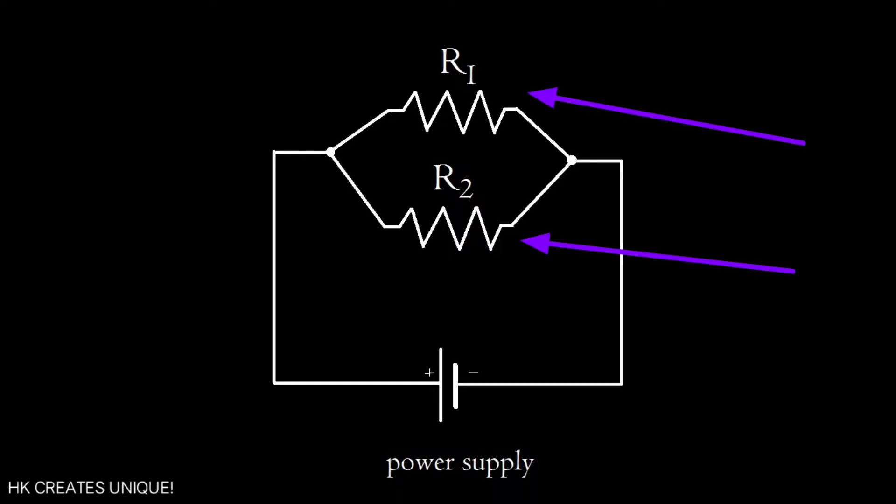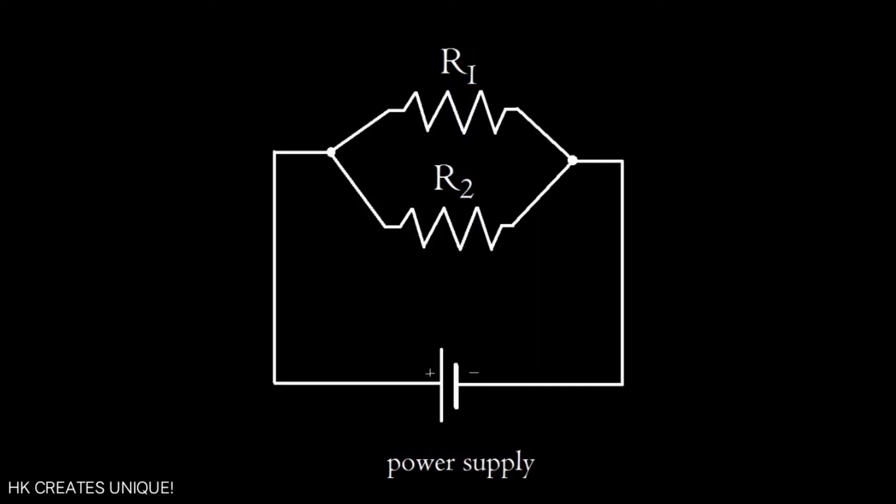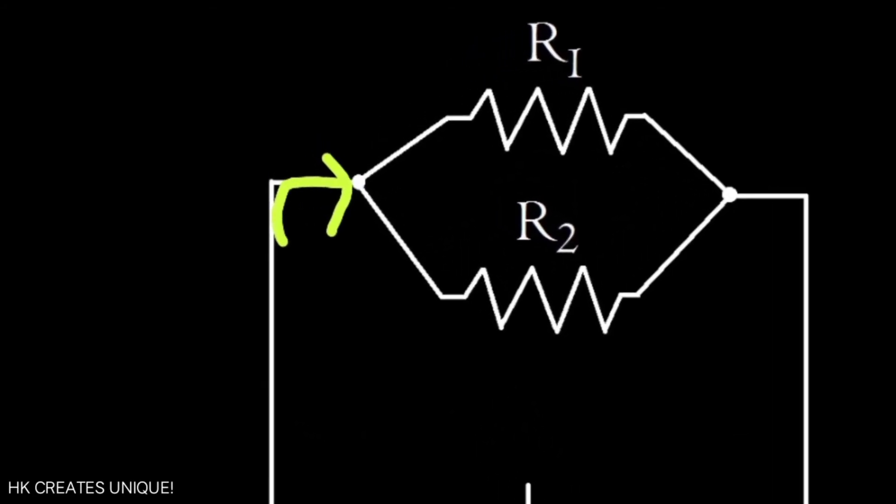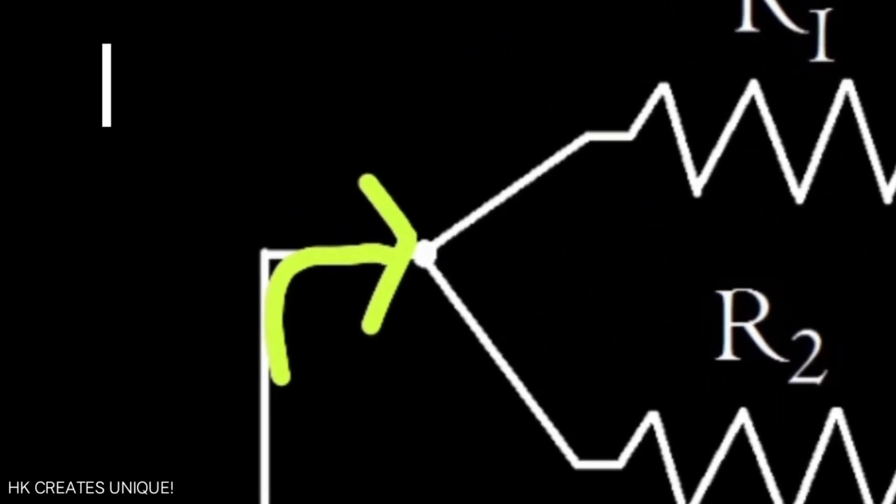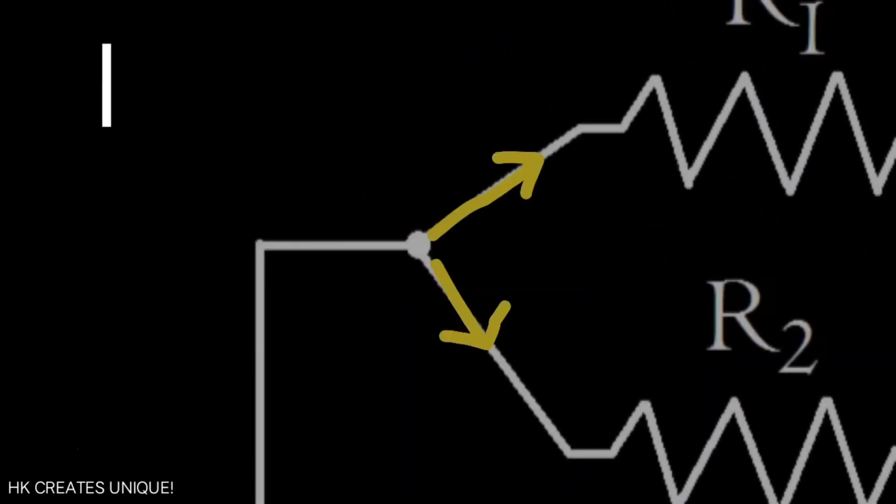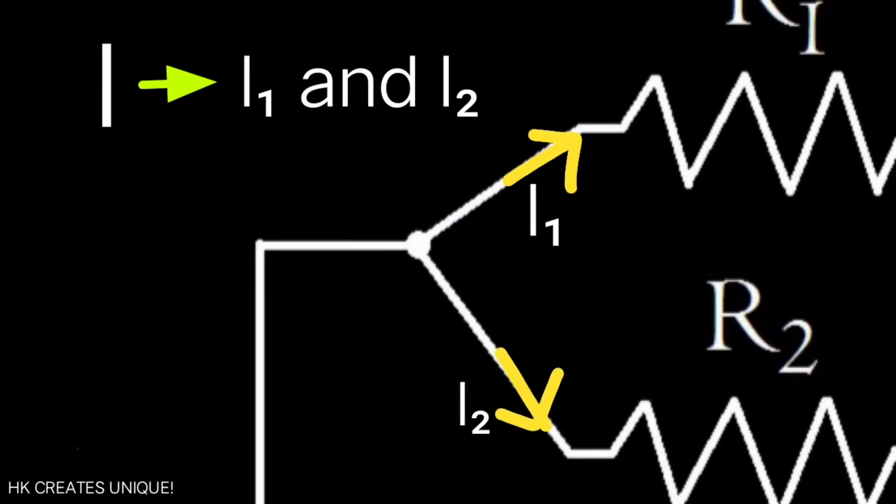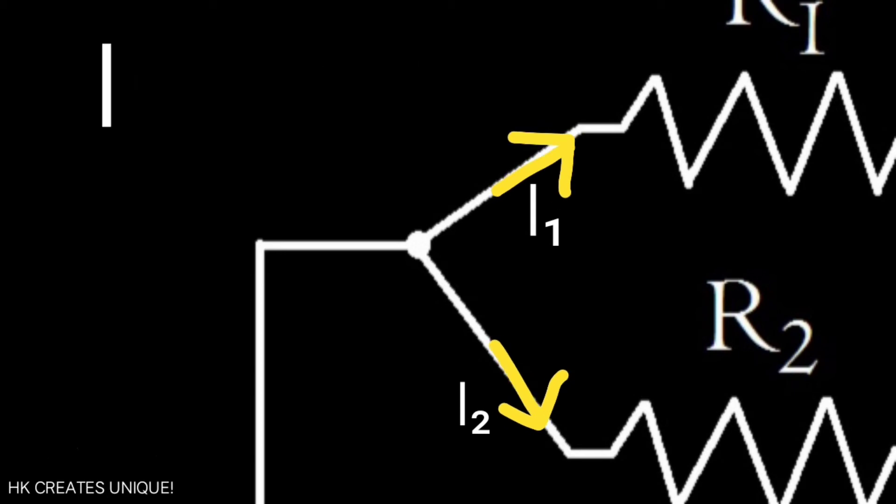Two parallel resistors are connected to a power supply. In the circuit, current comes from the positive terminal and enters this junction. From this junction, current splits into i1 and i2. Therefore, i equals i1 plus i2. This is Kirchhoff's current law.